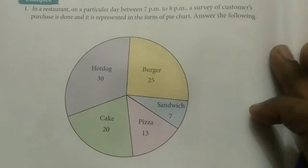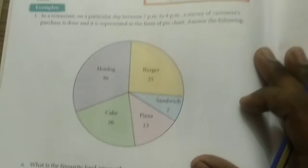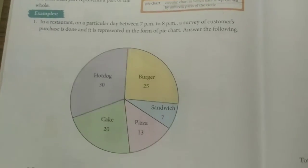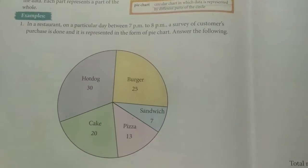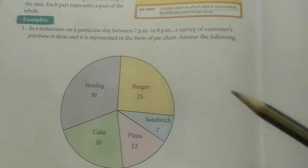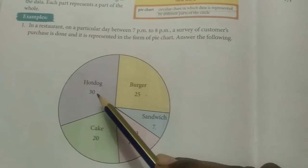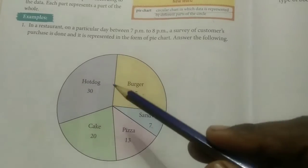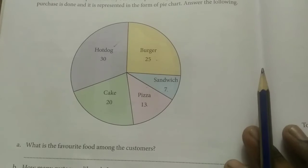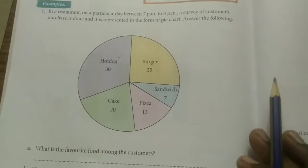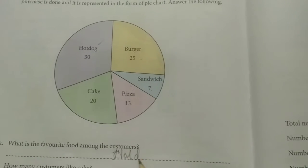Question 1: What is the favorite food among the customers? By looking at the numbers — Burger: 25, Sandwich: 7, Pizza: 13, Cake: 20, Hot Dog: 30 — the highest number is 30, which is Hot Dog. So the favorite food among the customers is Hot Dog.